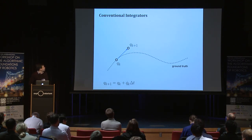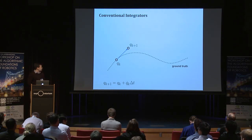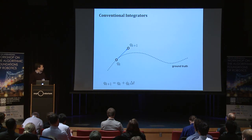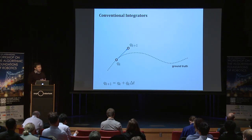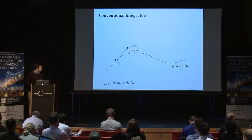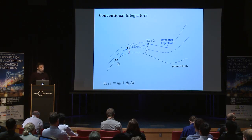Let's look at why this is happening. In conventional integrators, we start with initial states, and what the ODE tells us is the rate of change. But we are simulating a continuous system on a discrete computer, so we temporarily pretend the rate of change is constant. This makes a tiny error at first, but the real problem is the errors get worse because they accumulate.